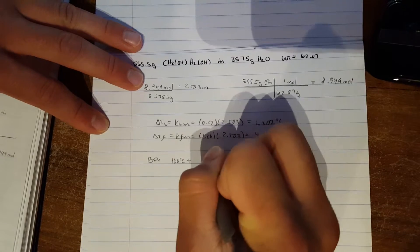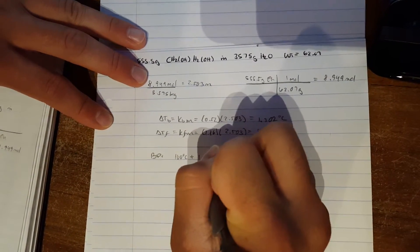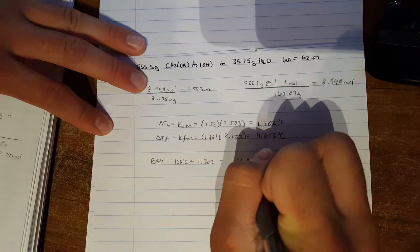For boiling point, we add this to 100 degrees Celsius, which gives us 101.3.